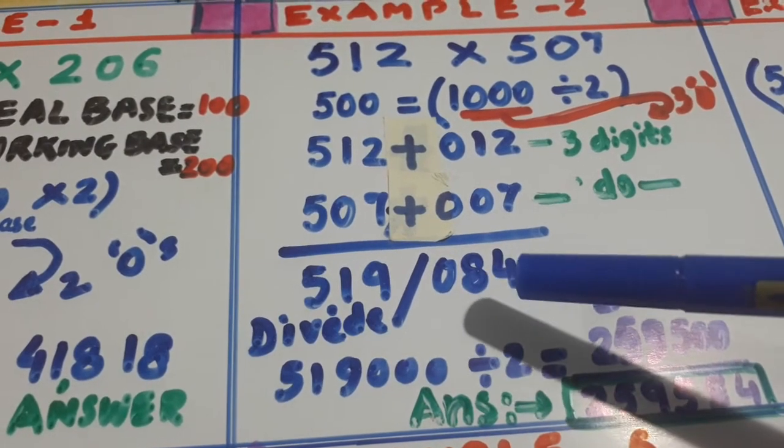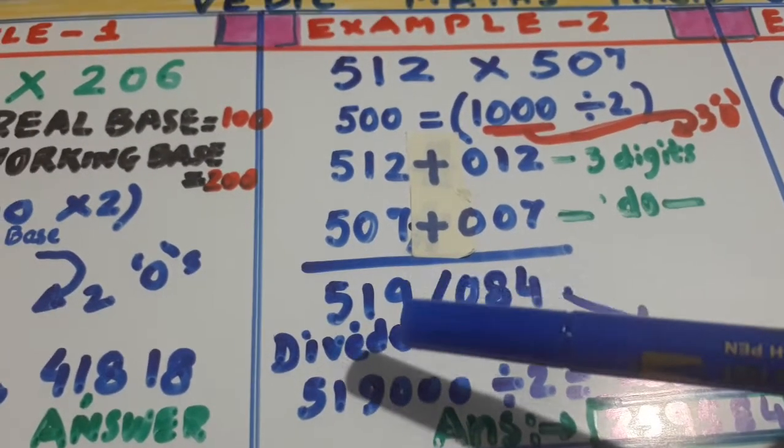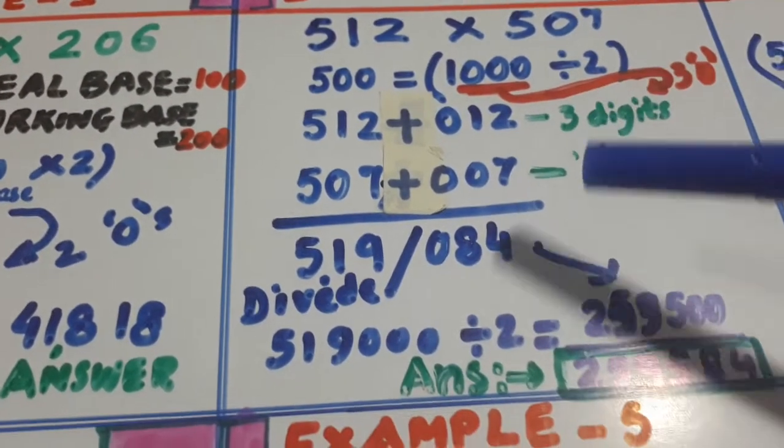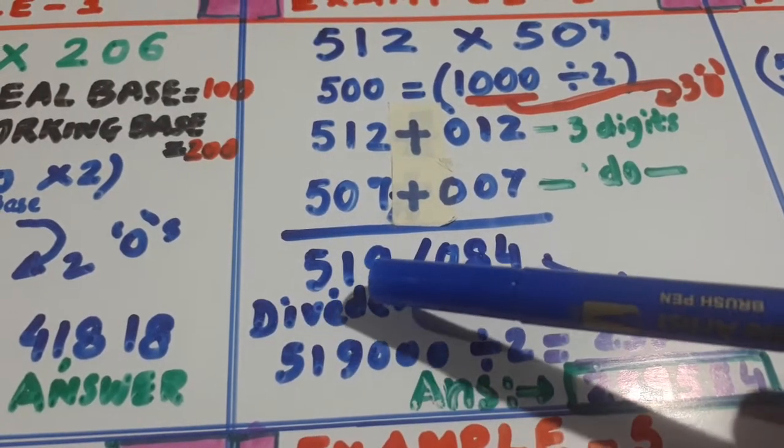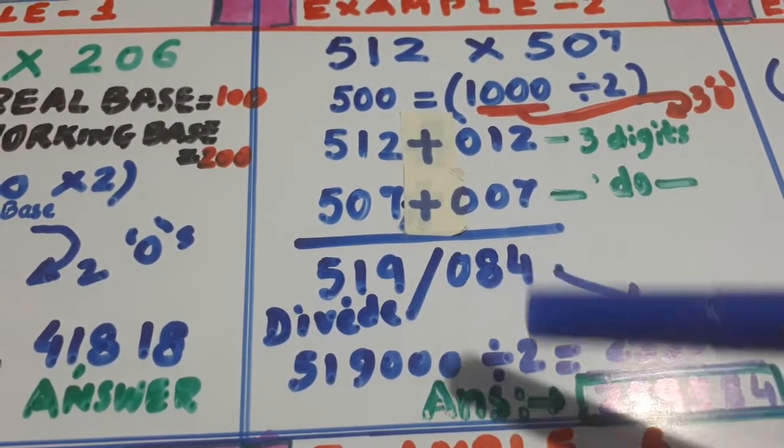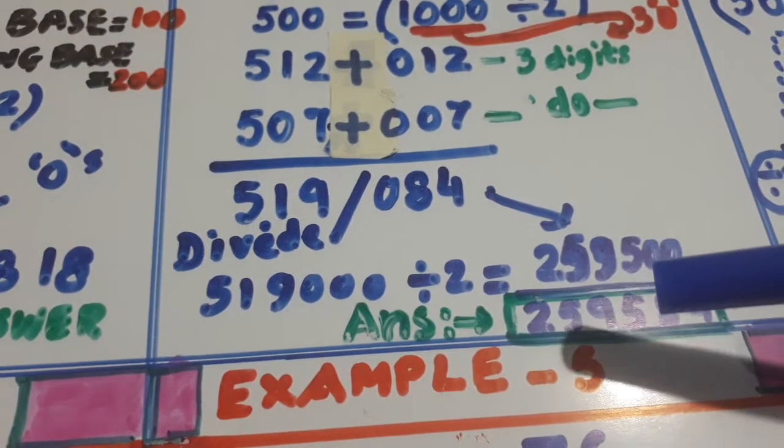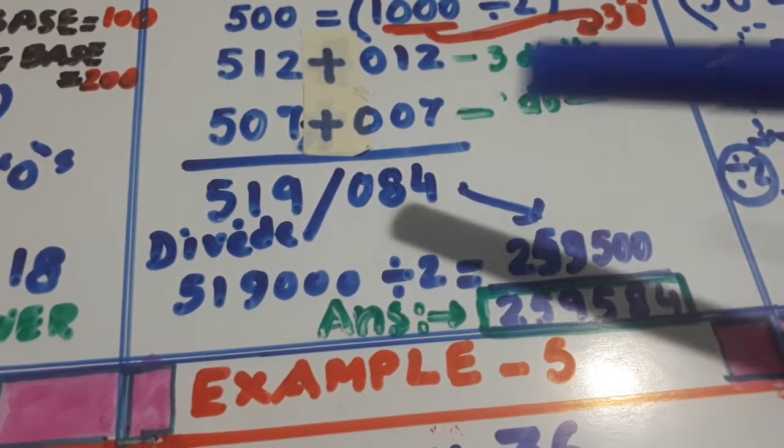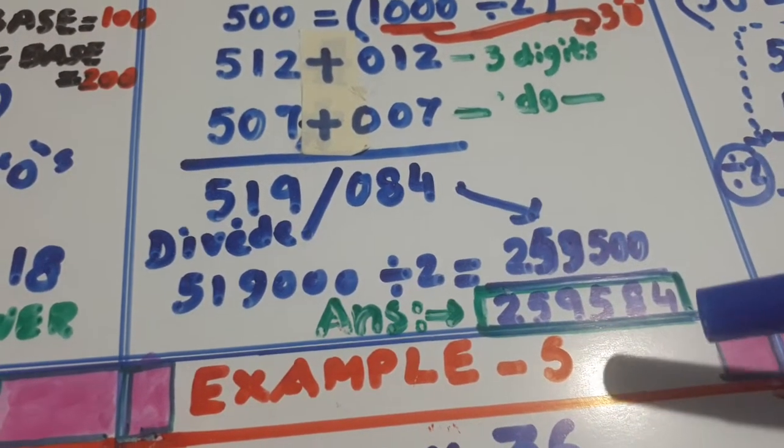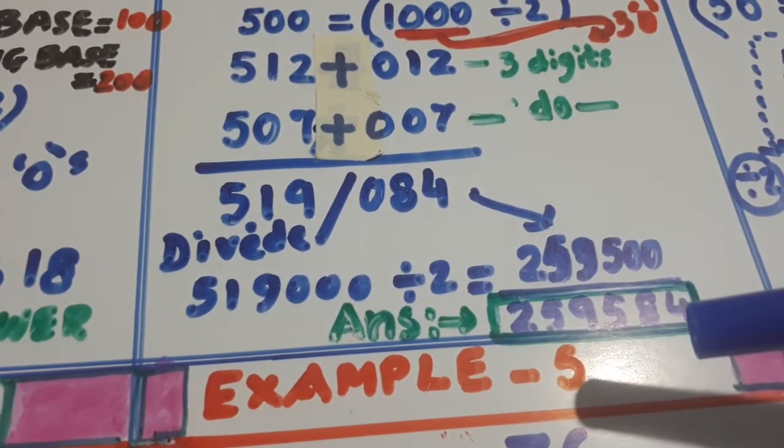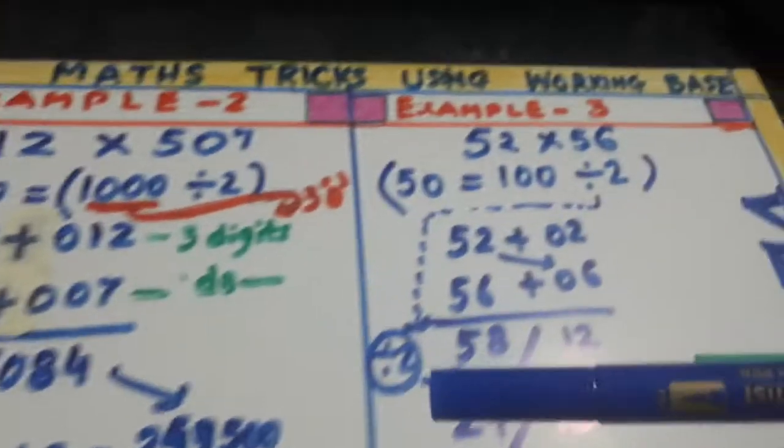Write it in 3 digits, 084. And now you have to divide by 2. Divide this 519000 by 2. And you get 259500. And add this 84, you get 259584. Next,